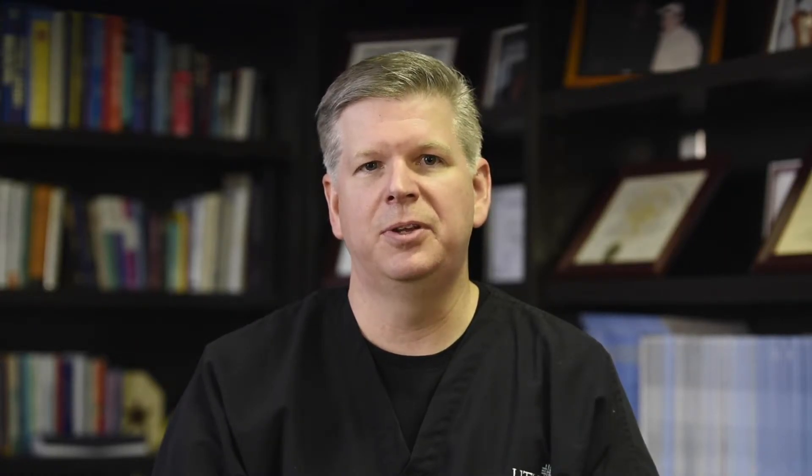The Hill-grade classification is an endoscopic assessment of the gastroesophageal flap valve based upon a retroflex view. This classification was originally developed by Hill and colleagues based on in vitro and in vivo assessment and was published in Gastrointestinal Endoscopy in 1996.